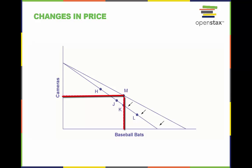The dashed lines make it possible to see at a glance whether the new consumption choice involves less of both goods or less of one good or more of the other. The new possible choices would be fewer baseball bats and more cameras, like point H, or less of both goods as at point J.